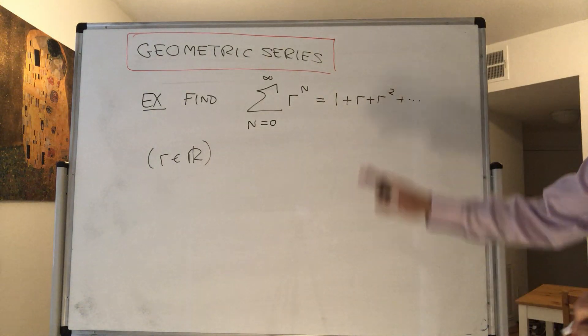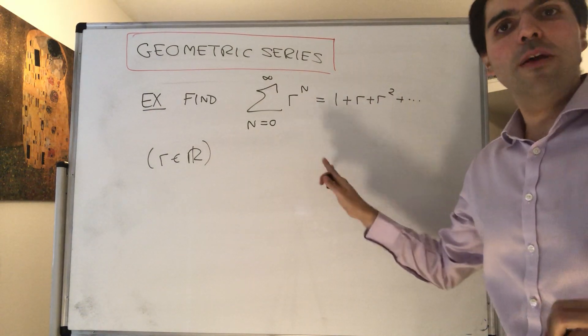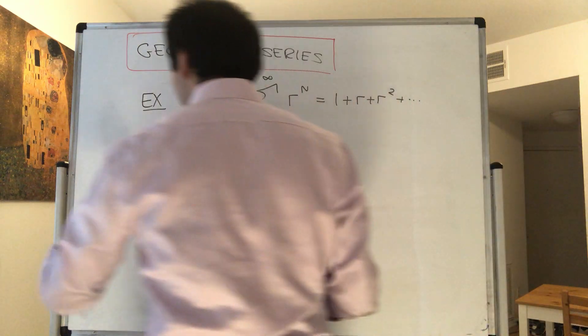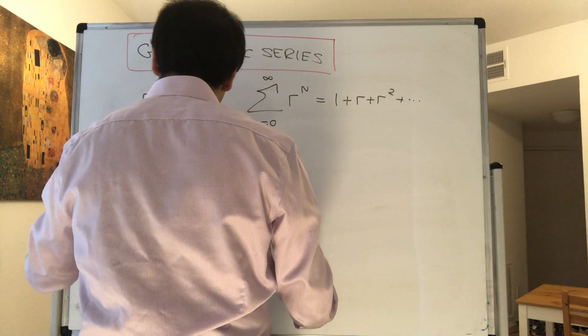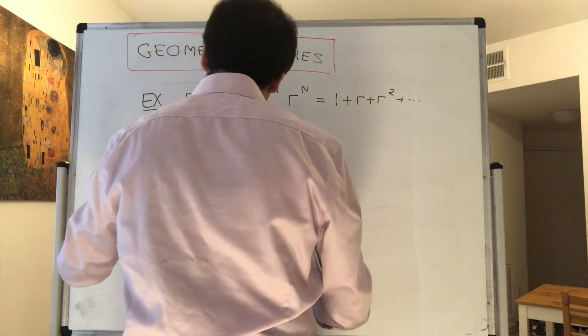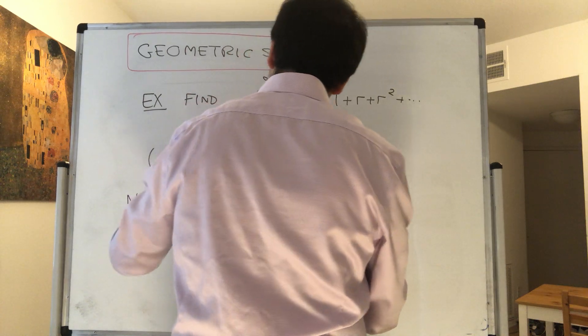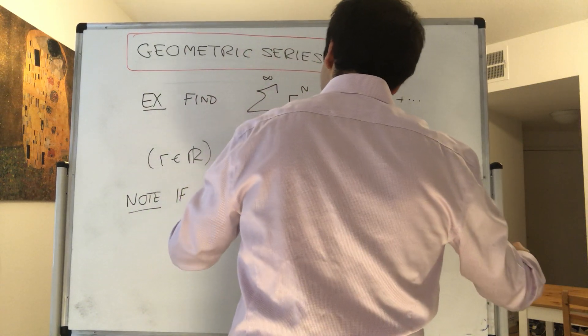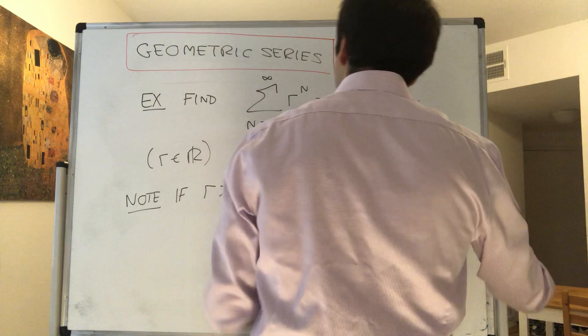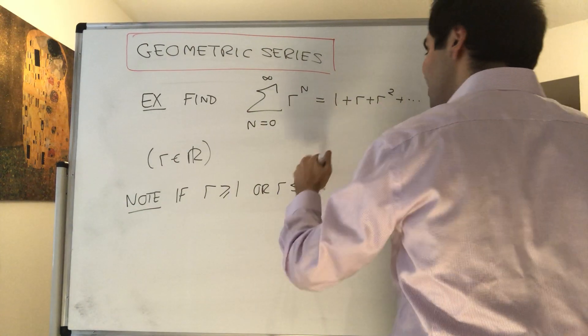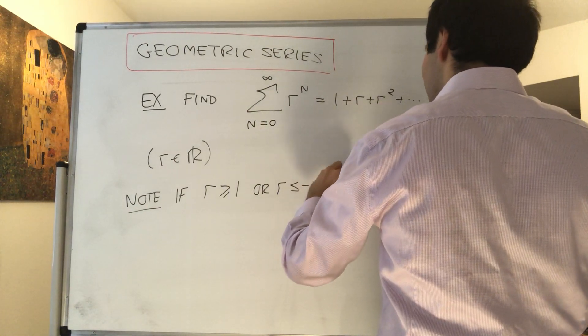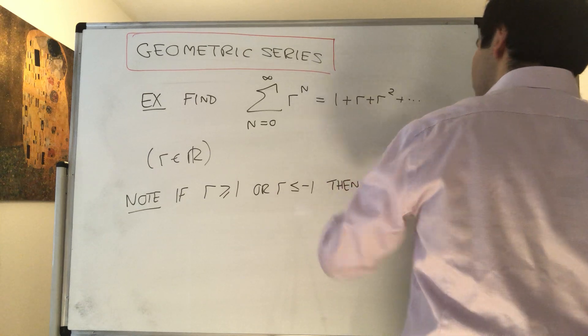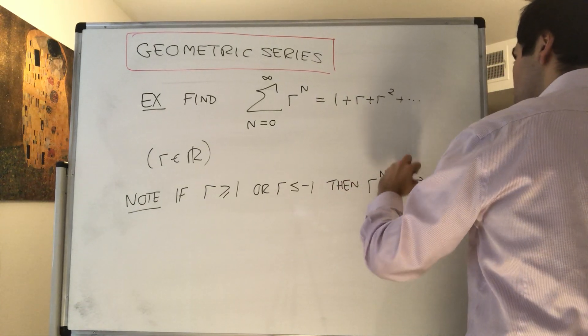Now the first thing to notice is this doesn't always converge. In particular, note if r is greater or equal to 1 or r is less or equal to minus 1, then the sequence itself, r to the n, definitely doesn't go to 0.